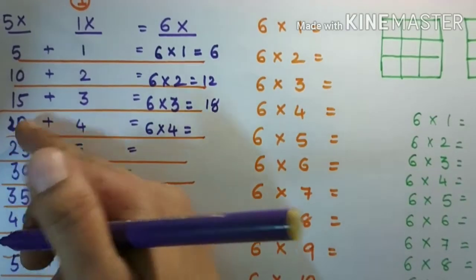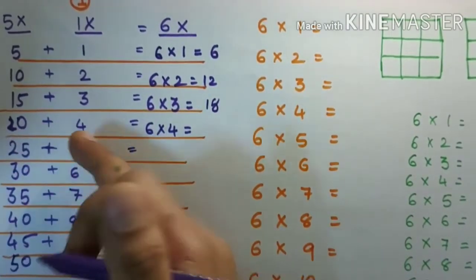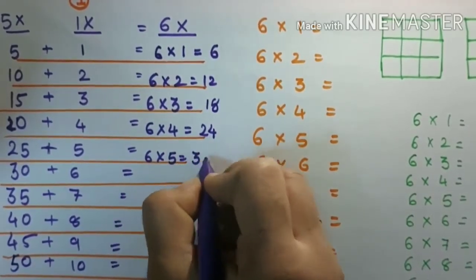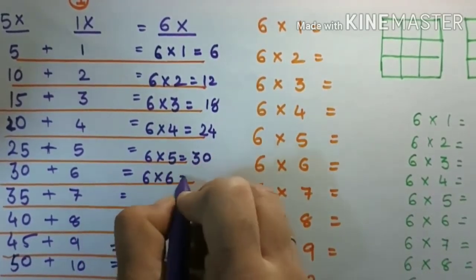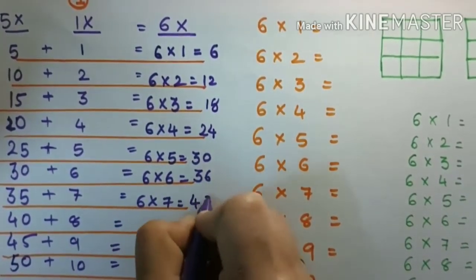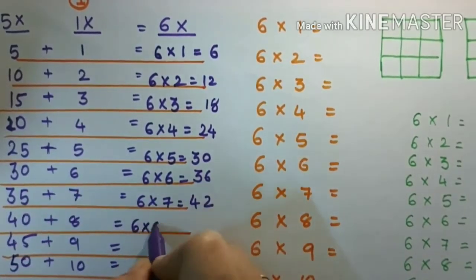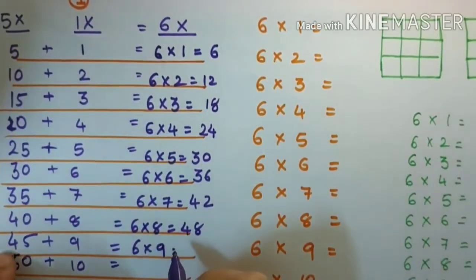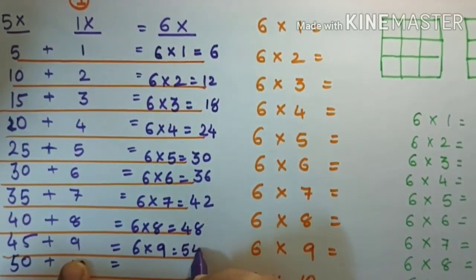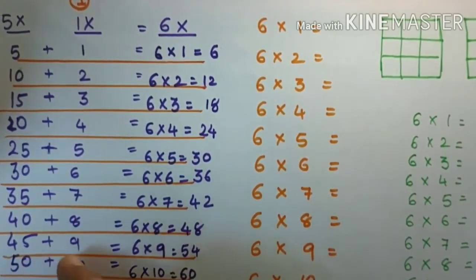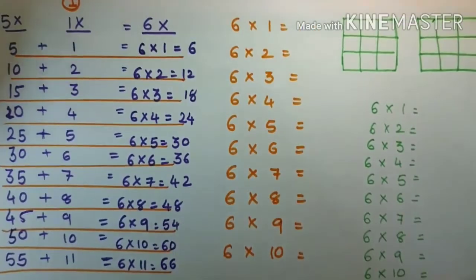Five fours are twenty and four ones are four, so twenty plus four is equal to twenty-four. Six fives are thirty, six sixes are thirty-six, six sevens are forty-two. Thirty-five plus seven is forty-eight. Six nines: forty-five plus nine is fifty-four. Six tens are sixty. So that completes the first method. Now move on to the next method.